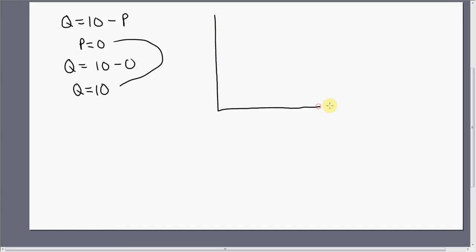Let's draw the demand curve. We've got quantity demanded on the horizontal axis, price on the vertical axis. Here's the origin 0. So if P is 0, Q is 10, that's going to be here somewhere. This is one point on the demand curve.